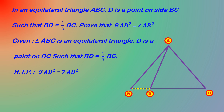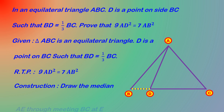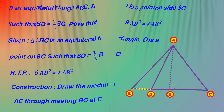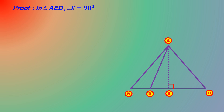To prove: 9 AD square is equal to 7 AB square. Construction: draw the median AE through A, meeting BC at E. In triangle AED, angle E is equal to 90 degrees, since the altitude and median are the same in an equilateral triangle.